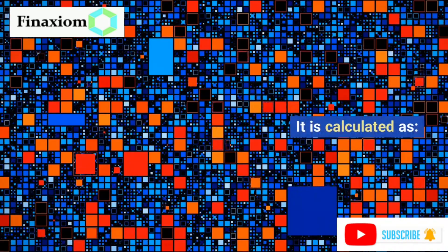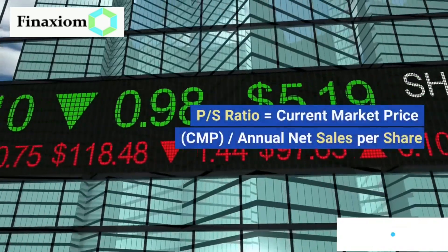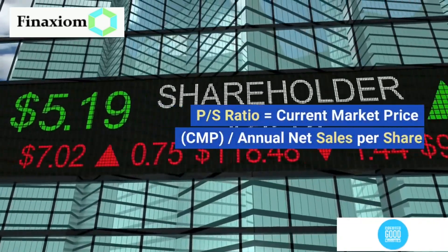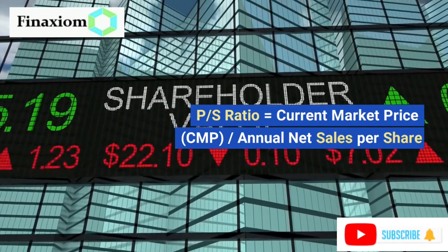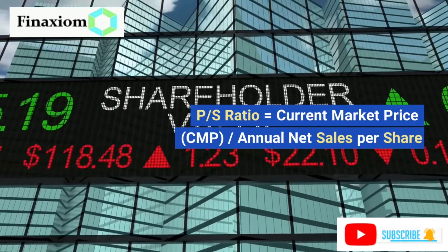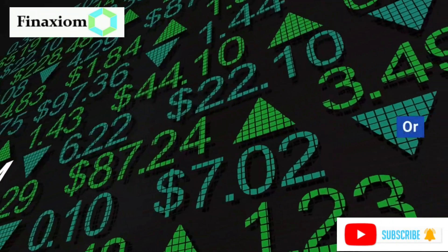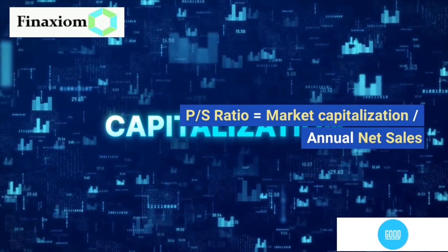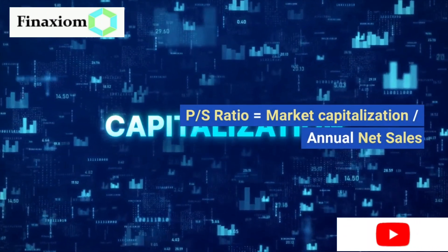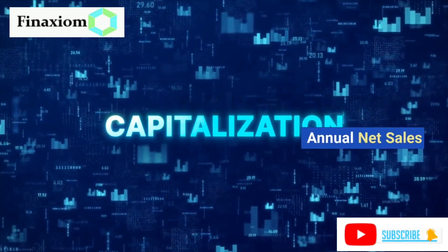It is calculated as: P/S ratio equals Current Market Price (CMP) divided by annual net sales per share. Or alternatively, P/S ratio equals market capitalization divided by annual net sales.